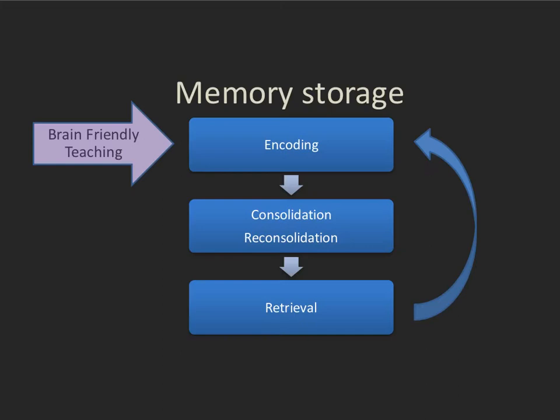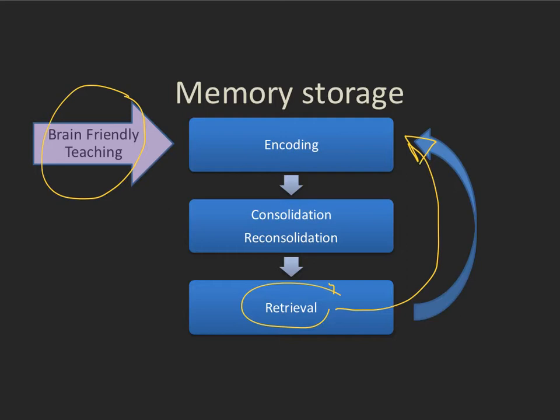I've talked before about brain-friendly teaching — finding methods that reduce cognitive load and help in the process of encoding. As information gets encoded into the brain, it gets consolidated into larger groups and combined with prior information. Then at some point we retrieve this information. As we retrieve our memories, we add new information to it, which then gets encoded again and reconsolidated, and this circle continues during the learning process.